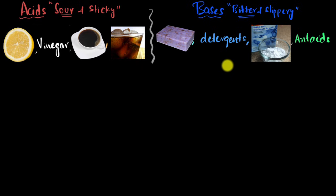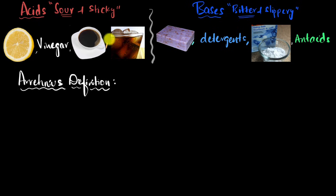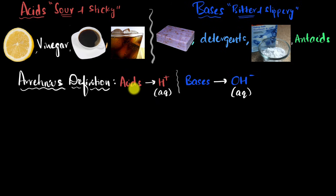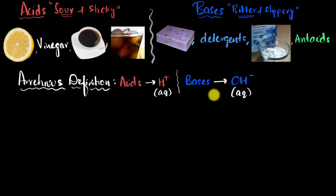It turns out there are more than one ways to define acids and bases, but we're going to start simple. We're going to use what we call the Arrhenius definition — the Arrhenius model of thinking about acids and bases. In this definition, we basically say acids are things that give you H+ ions in aqueous solutions. And similarly, bases are things that give you OH- ions in aqueous solutions. In other words, if you mix something in water and it starts giving you H+ ions, these are acids. And if you mix things in water that gives you OH- ions, those are bases.